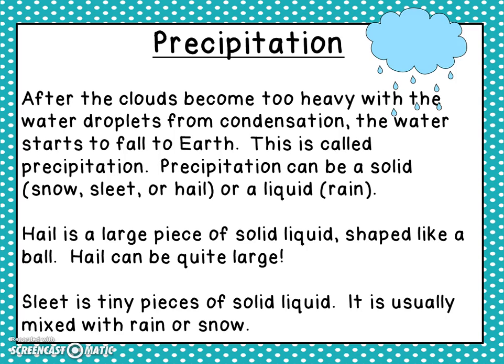Then we have precipitation. After the clouds become too heavy with the water droplets from condensation, the water starts to fall back to earth. This is called precipitation. Precipitation can be a solid like snow, sleet, or hail, or it can be a liquid like rain.